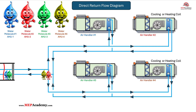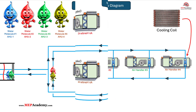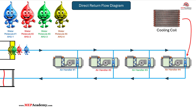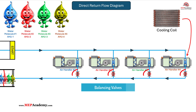Since the closest air handlers have less piping, they'll have less pressure drop — considering the pressure drop for all coils is the same. This creates different pressure drops for the piping circuits to and from each air handler, which creates a water balancing issue.